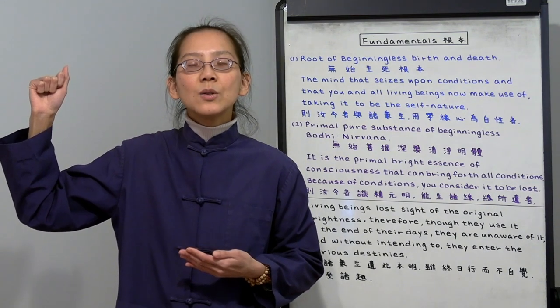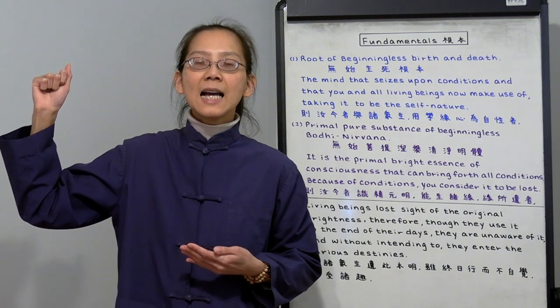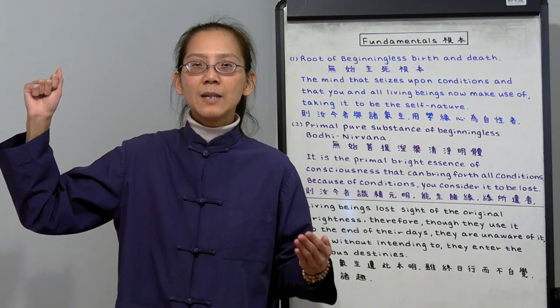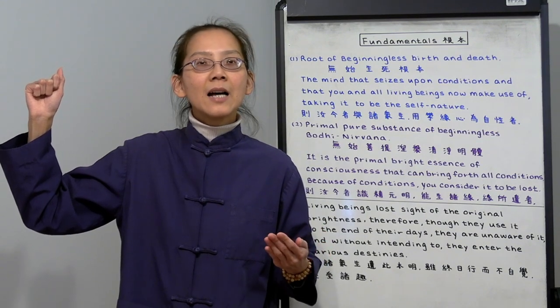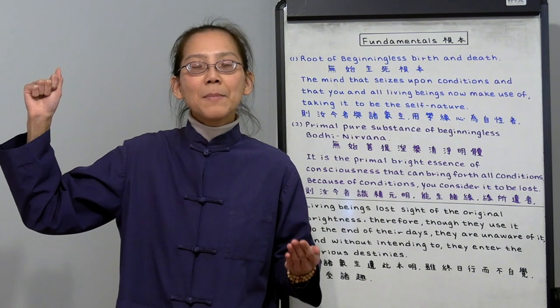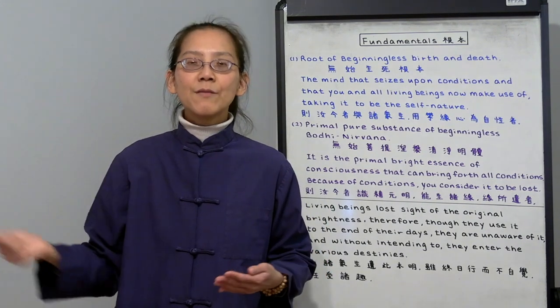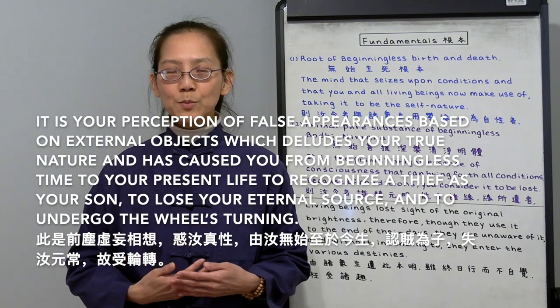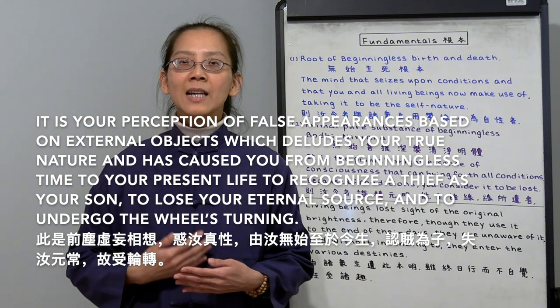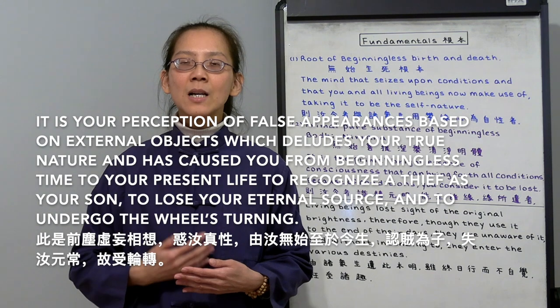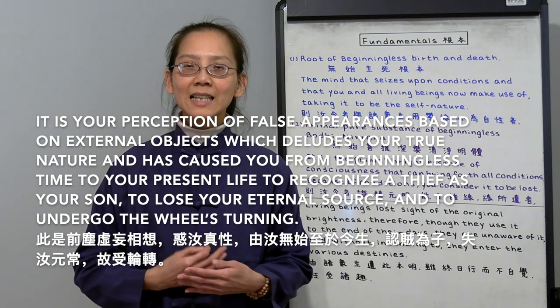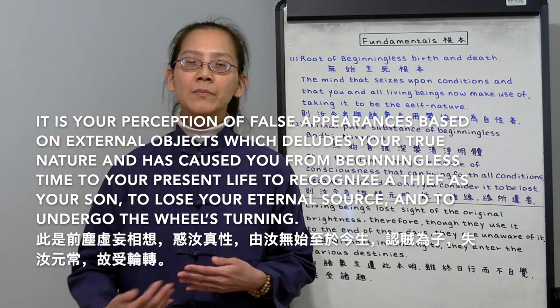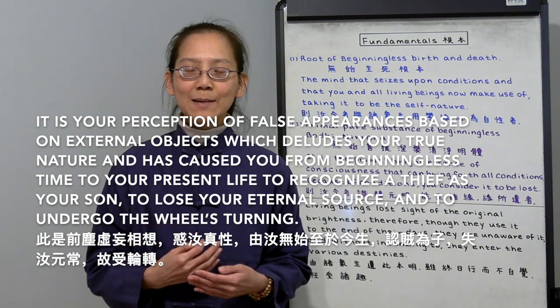Buddha then asked, what do you see it with? Ananda replied, I see it with my eyes, I see it with my mind. Then Buddha very harshly berated him, no, that is not your mind. Ananda was startled and scared. He said, if this is not my mind, then what is it? Buddha then firmly replied, it is your perception of false appearances based on external objects that has deluded your true nature and has caused you from the beginningless time to your present life to recognize the thief as your son, to lose the eternal source and to undergo the wheels turning.